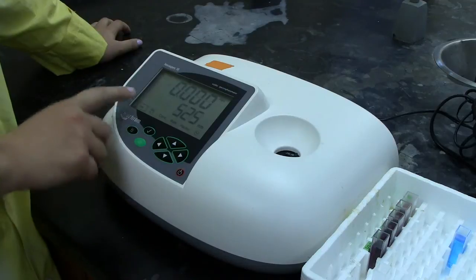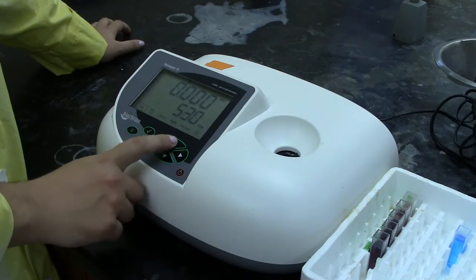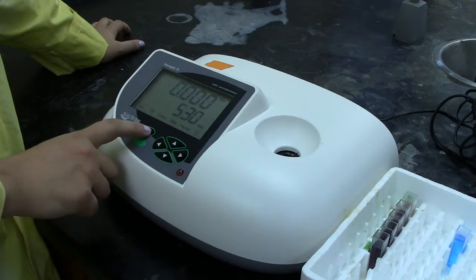To change the wavelength, you go to the far left. You can then increase or decrease the wavelength using the up or down buttons. Once you have the wavelength you want, you can press the check mark to confirm.